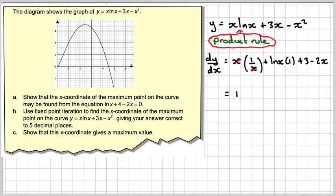These then cancel so you get 1 plus ln x plus 3 minus 2x. And you get ln x plus 4 minus 2x.